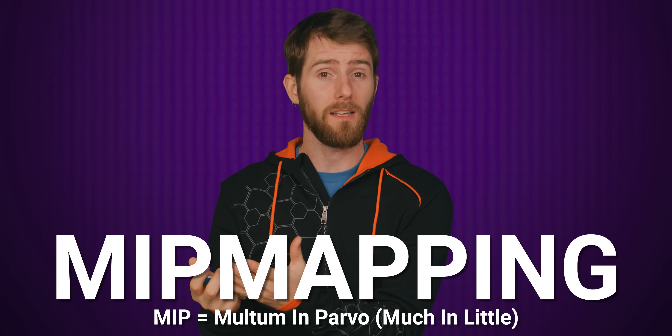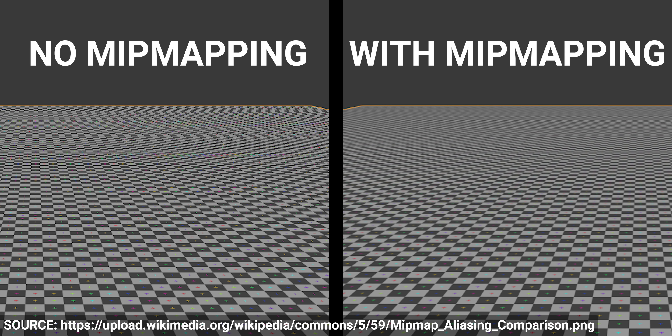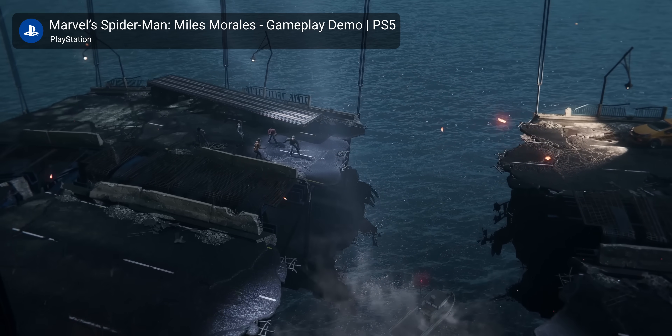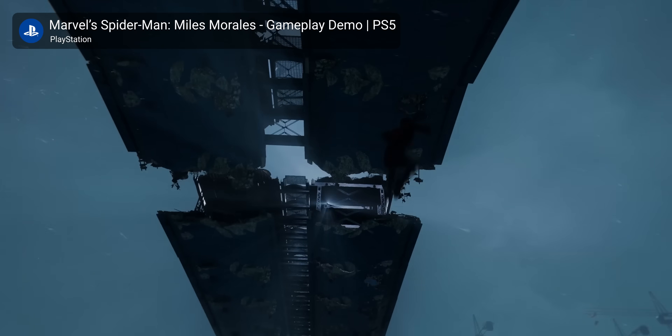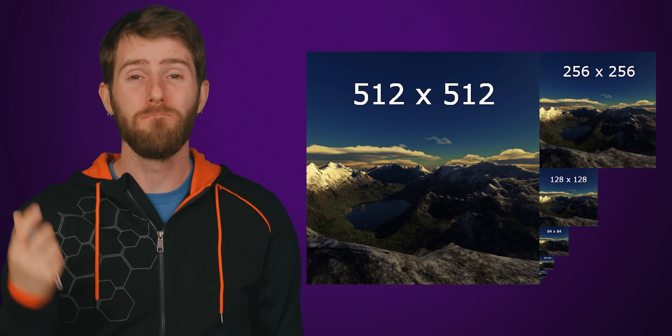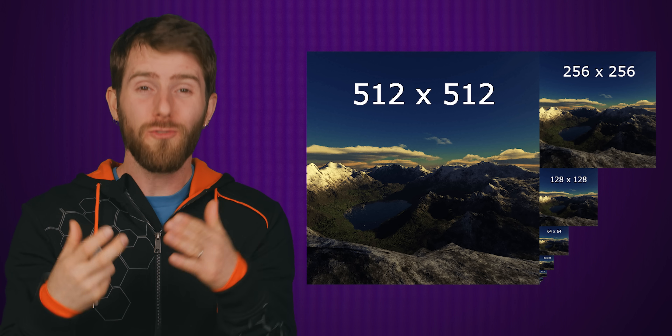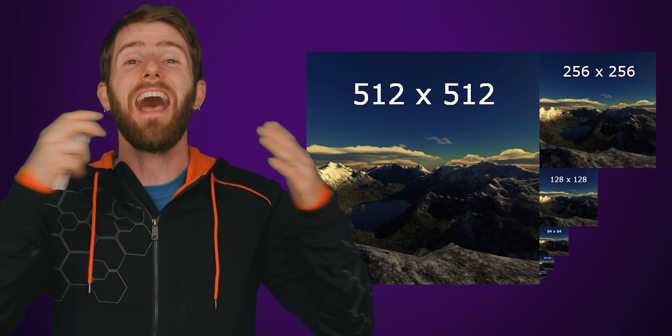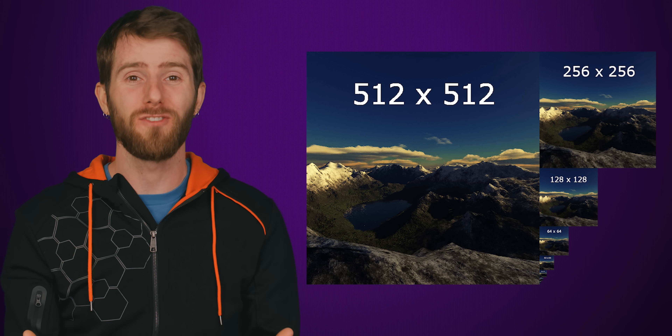Although there are ways to lighten the load on the GPU, such as mipmapping, these can actually increase the amount of space on disk that the game takes up. Mipmapping is a way to render faraway textures at lower resolutions, so the GPU isn't working super hard to render lots of detail at distances where the player won't even notice it. The problem, though, is that mipmapping requires multiple low-resolution versions of the texture that are saved alongside the original high-res image, meaning mipmapping can actually result in a 33% increase in file size.